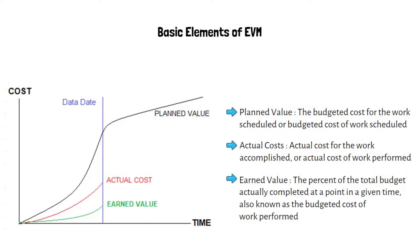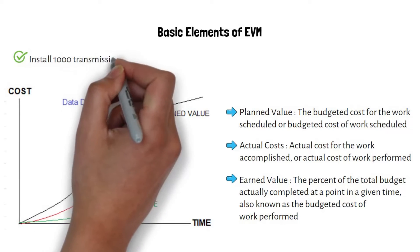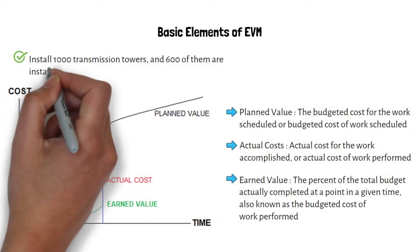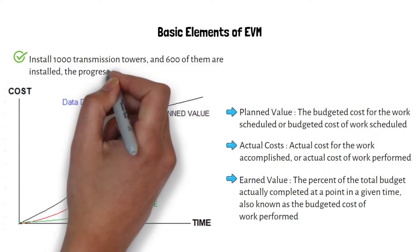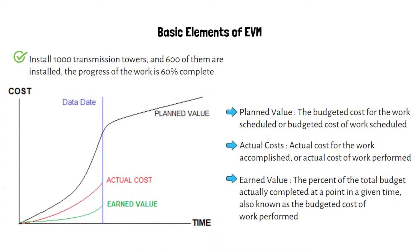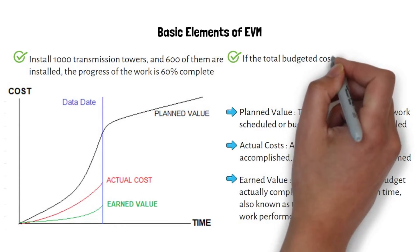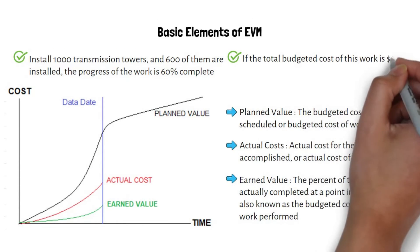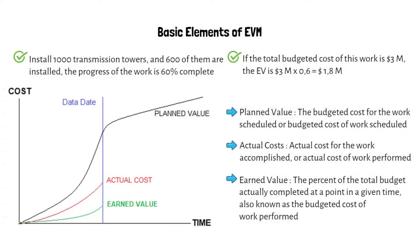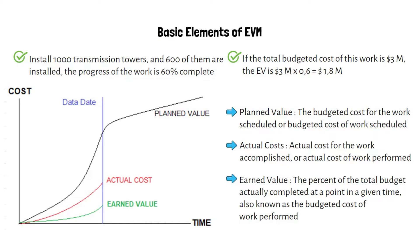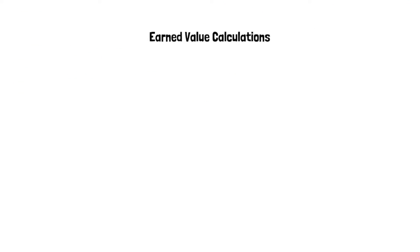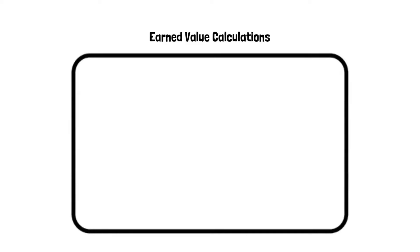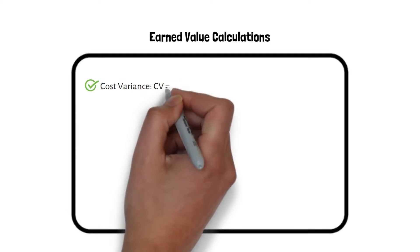For example, if the total scope of work is to install 1,000 transmission towers and 600 of them are installed, the progress of the work is 60% complete. If the total budgeted cost of this work is 3 million dollars, the Earned Value is 3 million dollars multiplied by 0.6, which equals 1.8 million dollars.